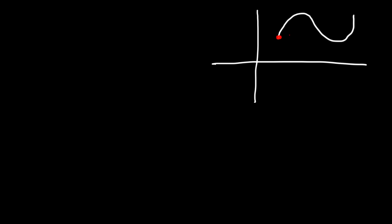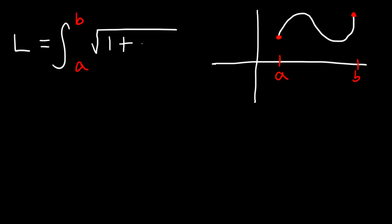Let's say if we want to find the length of an arc starting from point A to point B. What equation can we use to do so? Perhaps you've seen this equation in your textbook. The arc length from A to B is the integration from those two points of the square root of 1 plus f prime of x squared times dx.